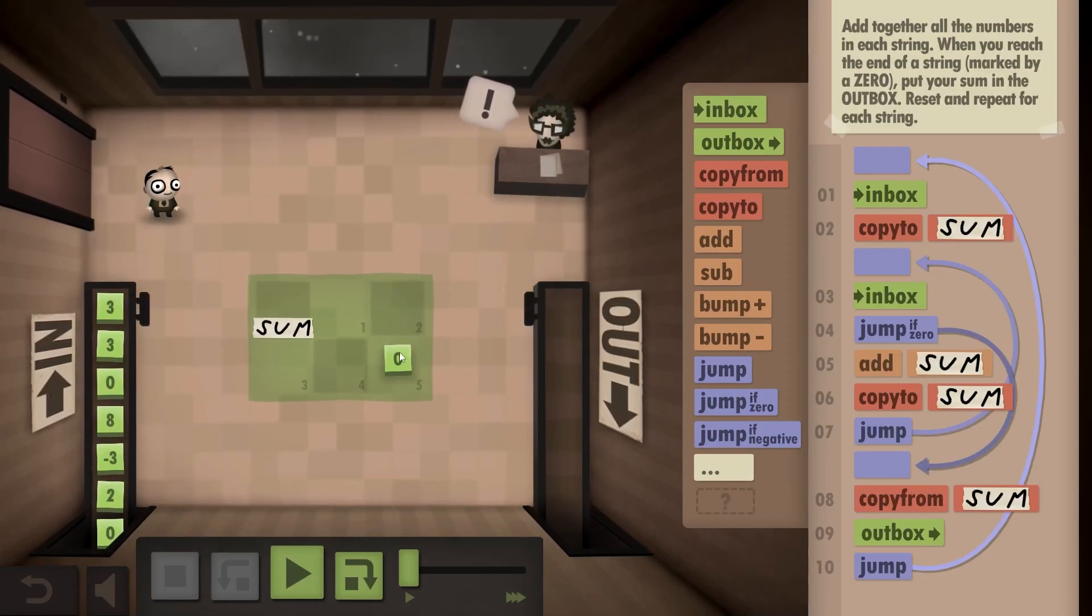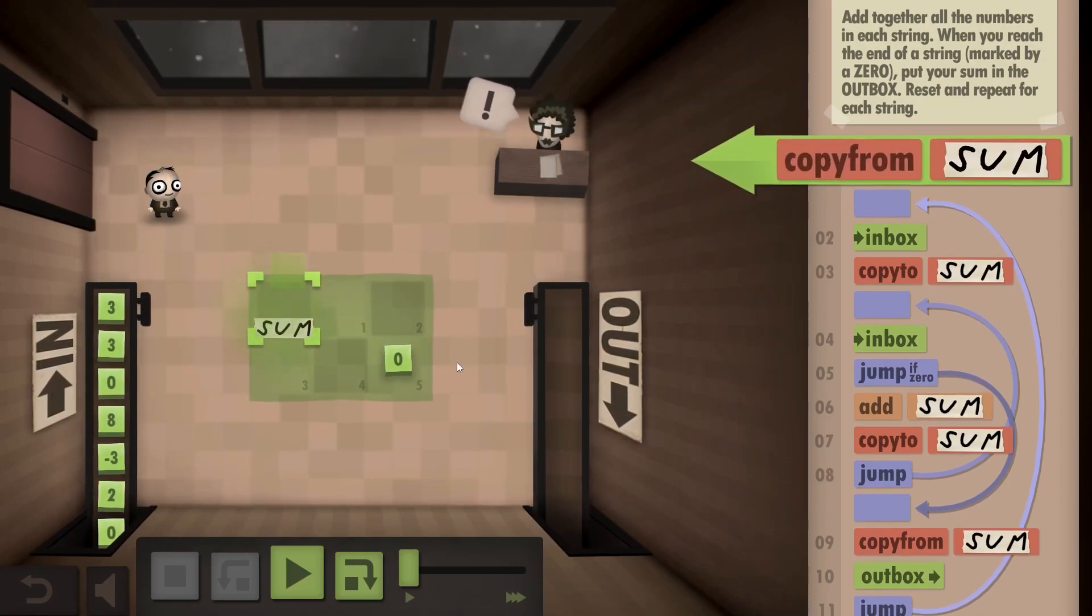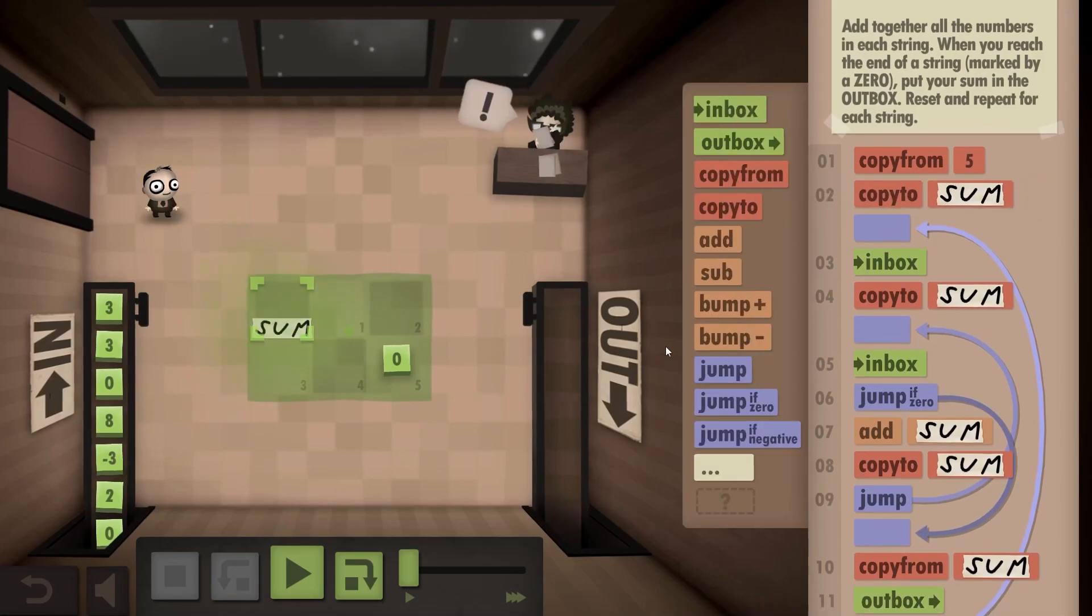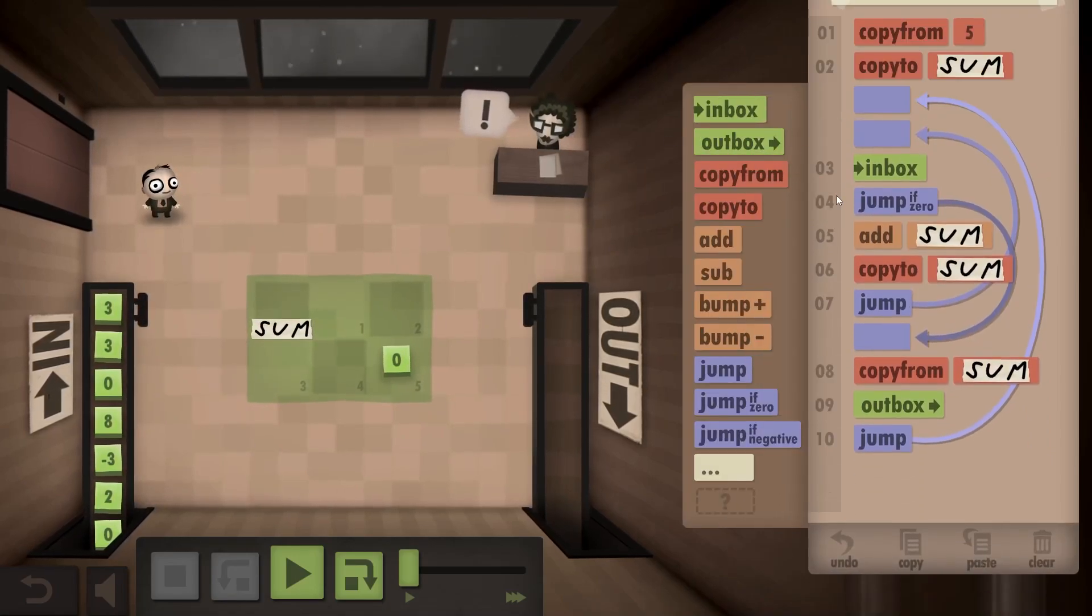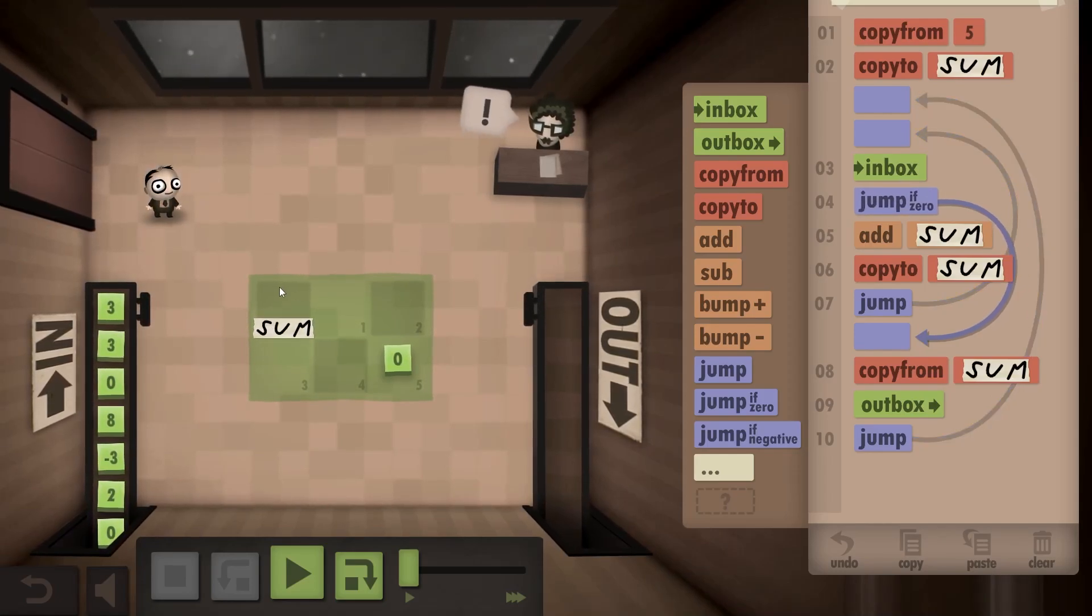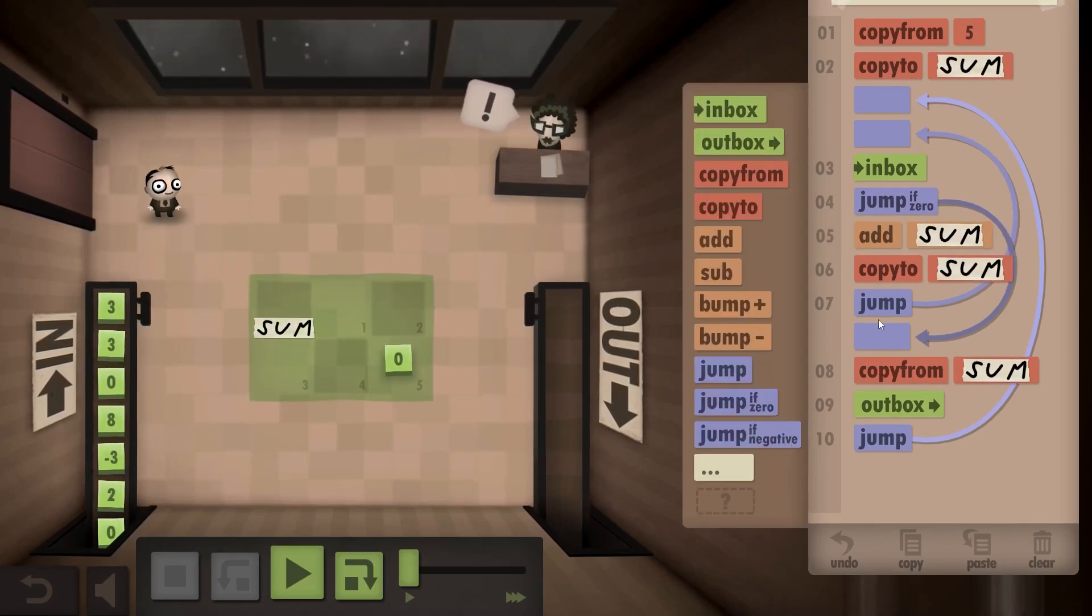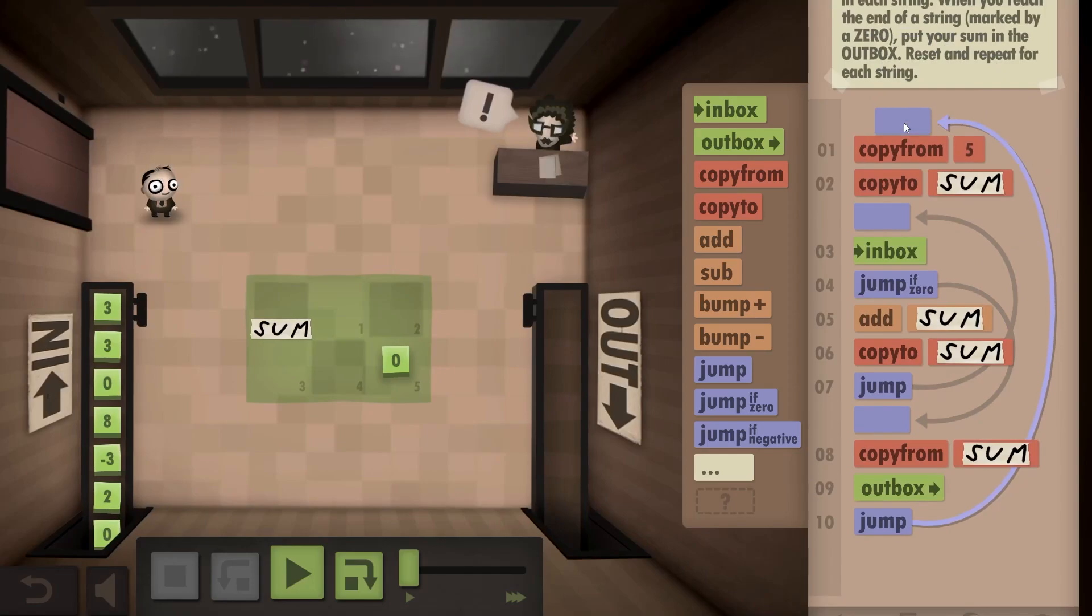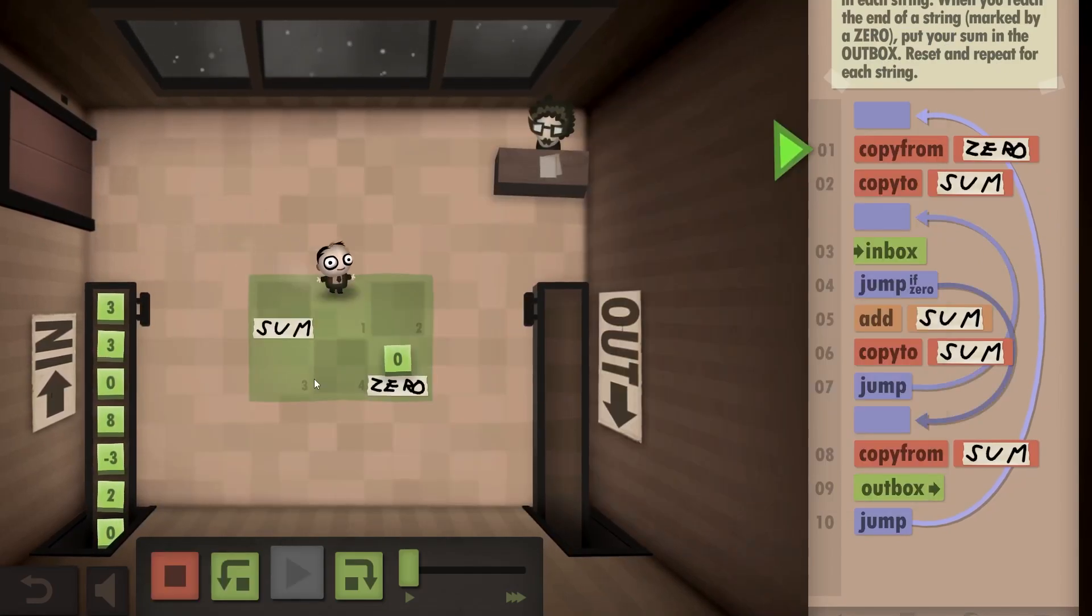So what I think we need to do is start the sum with this zero. Let's copy from the zero, copy to the sum. And in that case, we don't need this part. So we just inbox. If it's zero, we read from the sum. Otherwise, we add to the sum and repeat. Good. So I need to sort my jump here like that. And I'm gonna call this zero. Okay, this should work.